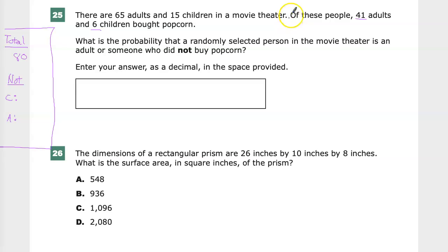So for children, if I have 6 who bought it out of 15, I just subtract and get 9. For adults, if I have 65 and 41 of them get it, that means I have 24 people who did not.